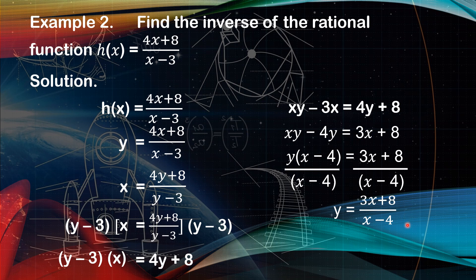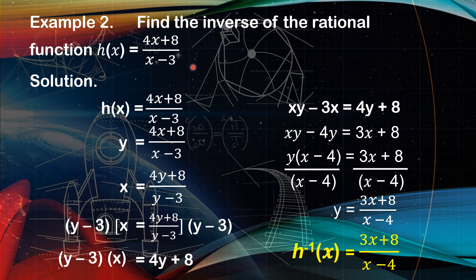Our last step is to change y to the inverse notation: h⁻¹(x) equals 3x plus 8 over x minus 4. Therefore, the inverse of h(x) equals 4x plus 8 over x minus 3 is h⁻¹(x) equals 3x plus 8 over x minus 4.